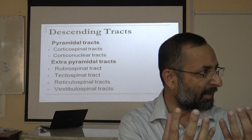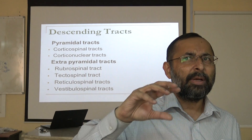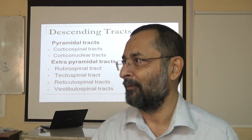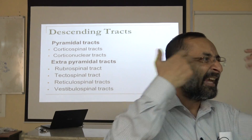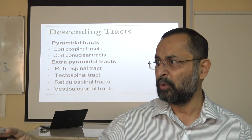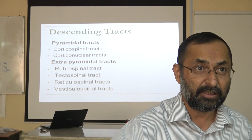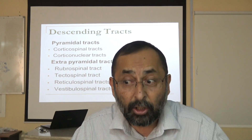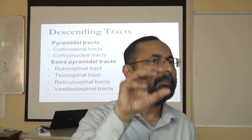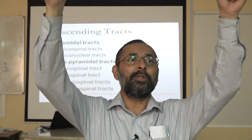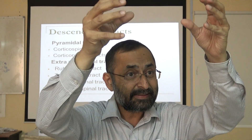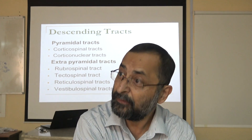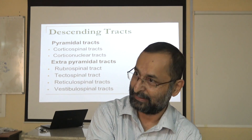Corticonuclear tracts come from the cortex and control the cranial nerve nuclei — including the vagus nucleus, facial nerve nucleus, trigeminal nucleus, glossopharyngeal nucleus, and accessory nerve nucleus — present in the midbrain, pons, and medulla. The cranial nerve nuclei in turn control the muscles. So corticonuclear tracts come from cortex and control cranial nerve nuclei, which then control the muscles.